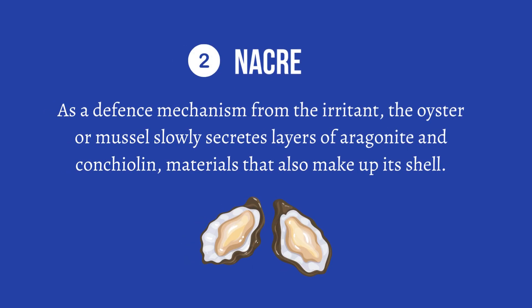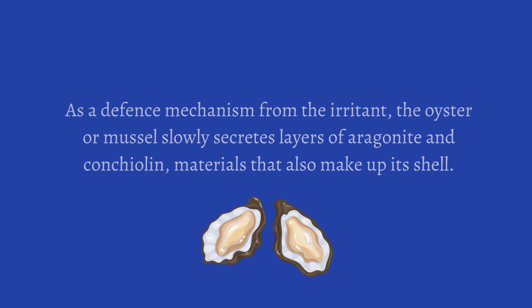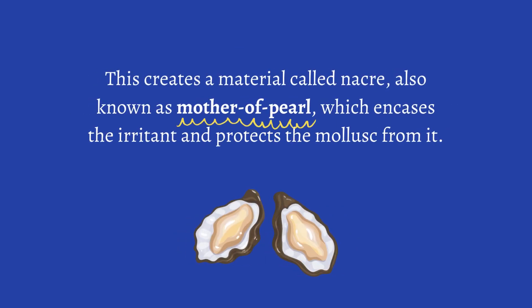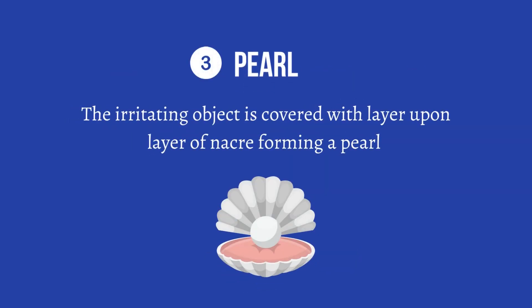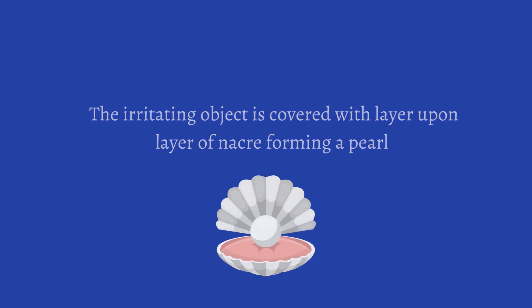As a defense mechanism from the irritant, the oyster or mussel slowly secretes layers of aragonite and conchiolin, materials that also make up its shell. This creates a material called nacre, also known as mother of pearl, which encases the irritant and protects the mollusk from it. The irritating object is covered with layer upon layer of nacre, forming a pearl.